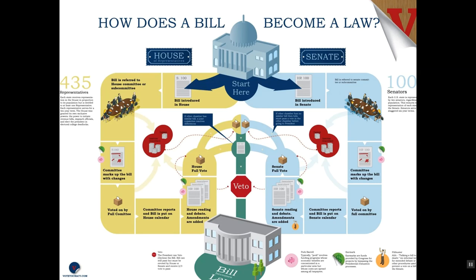For example, a committee member might determine that one penny per dollar won't raise enough money to fund education and propose an amendment raising it from a penny tax to a nickel tax — five cents on every dollar. If the amendment passes a majority vote in committee, the bill is changed. Once the committee is done, it votes on the bill as a whole as amended. If they agree to pass it, the bill moves on to the next step; if not, it's dead. Assuming our nickel tax survives, the next step is for House leadership to schedule the bill for consideration by the entire House. House leadership can unilaterally kill a bill simply by refusing to put it on the schedule.